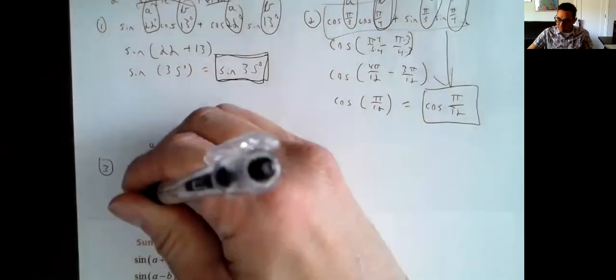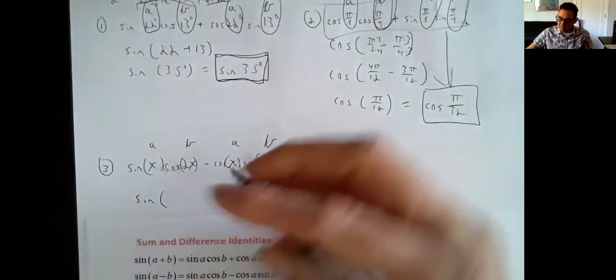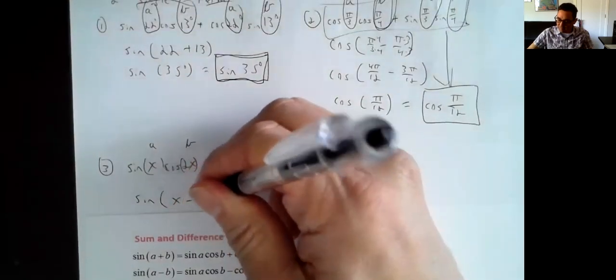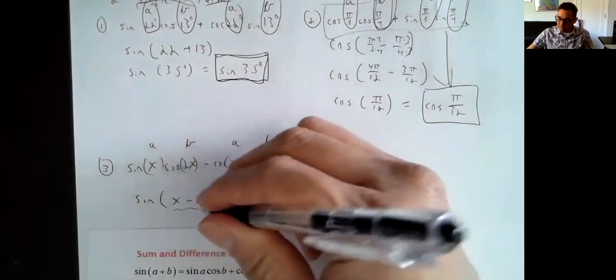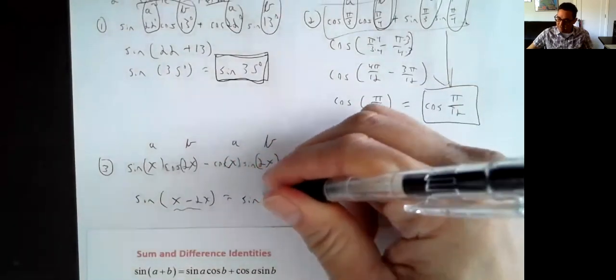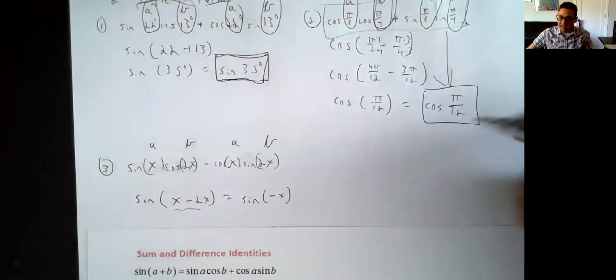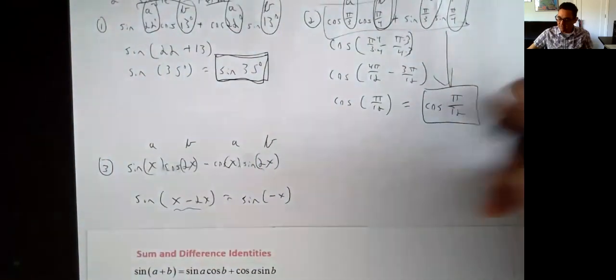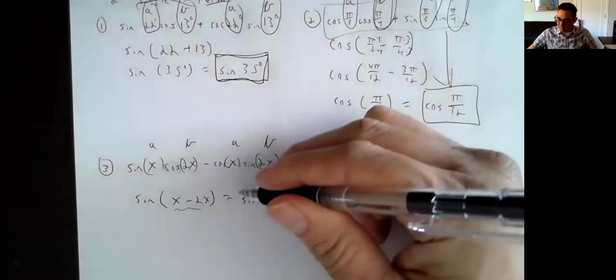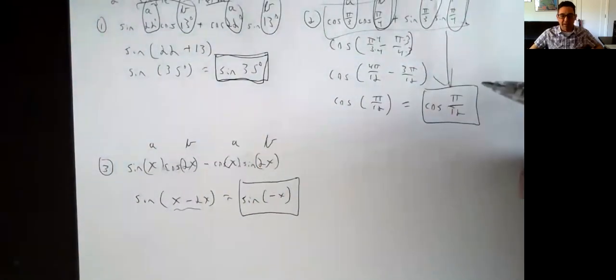So that means it's sine of my A angle, which is x, minus my B angle, which is 2x. I can combine those terms: sine of x minus 2x, just sine of negative x. If the x is negative, traditionally we do leave the parentheses around it, so that would be my final answer.